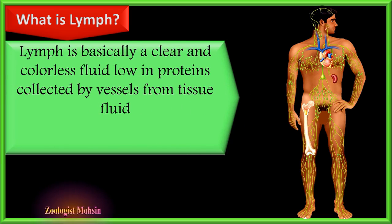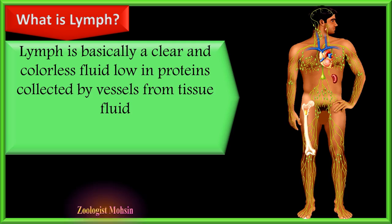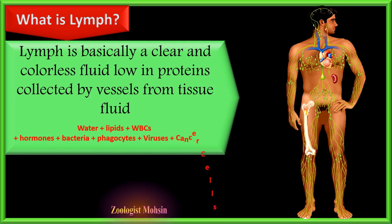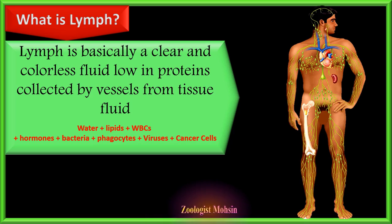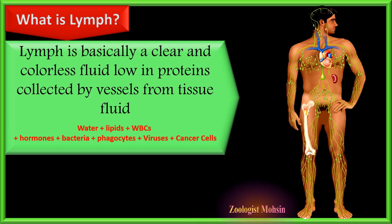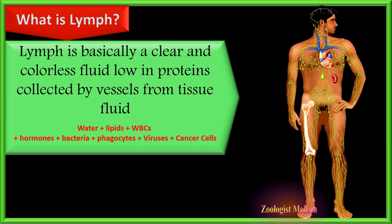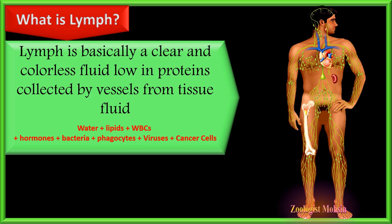What is lymph? Lymph is basically a clear and colorless fluid, low in proteins, collected by vessels from tissue fluid. The composition of lymph differs in different places and at different times. For example, when the small intestine is filled with food, the collected lymph is milky due to a large amount of lipids.